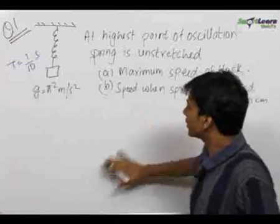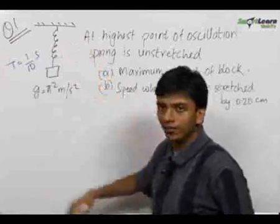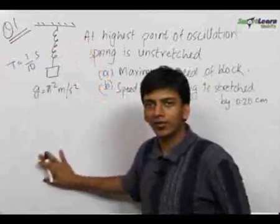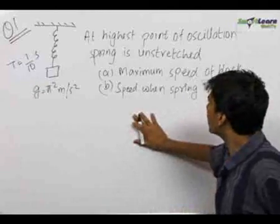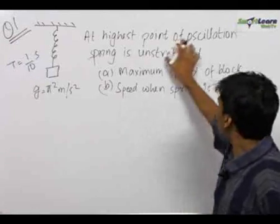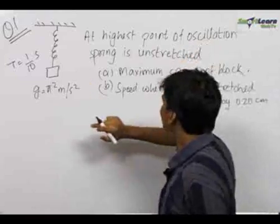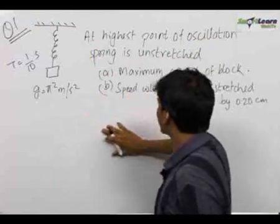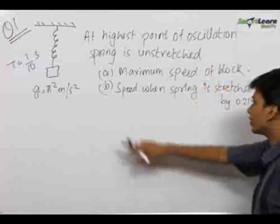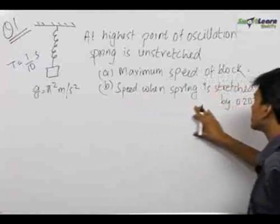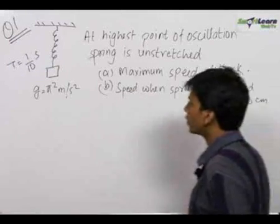In this question we have a block hanging from a spring. A block hanging from a spring under the influence of gravity undergoes simple harmonic motion. At the highest point of oscillation the spring is at its natural length, that is the spring is unstretched. We need to find out the maximum speed of the block and the speed when the spring is stretched by 0.20 centimeters.